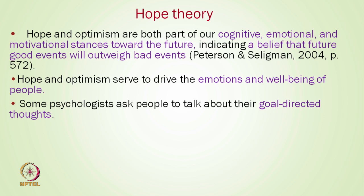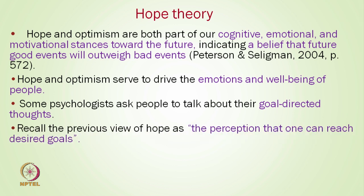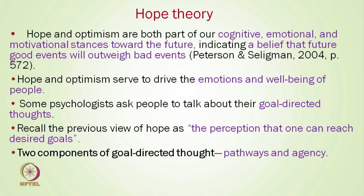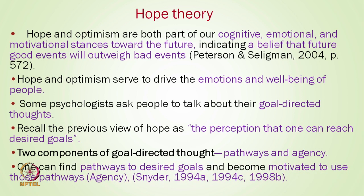Some psychologists ask people to talk about their goal-directed thoughts, and by knowing these thoughts they can assess level of hope. Hope is the perception that one can reach desired goals. When we talk about hope, it is defined on the basis of goal-directed thoughts, which have two major factors: pathways and agency. One can find pathways to desired goals and become motivated to use those pathways. These are the two main factors defining goal-directed thoughts in hope theory.